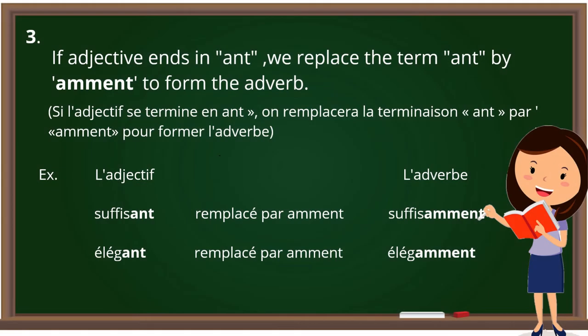Rule number three: if the adjective ends in -ant, we replace the ending -ant with -amment. For example, 'suffisant' ends in -ant, so we change -ant to -amment, giving us 'suffisamment.' The next adjective is 'élégant,' which also ends in -ant, so we replace it with -amment to get 'élégamment.'